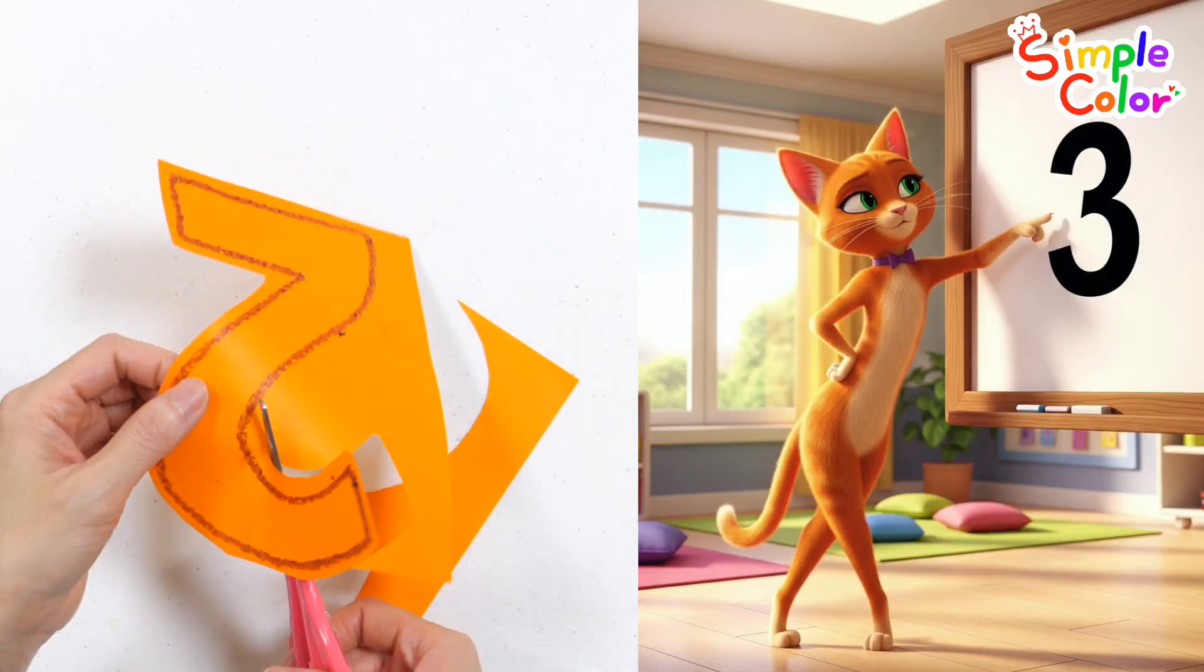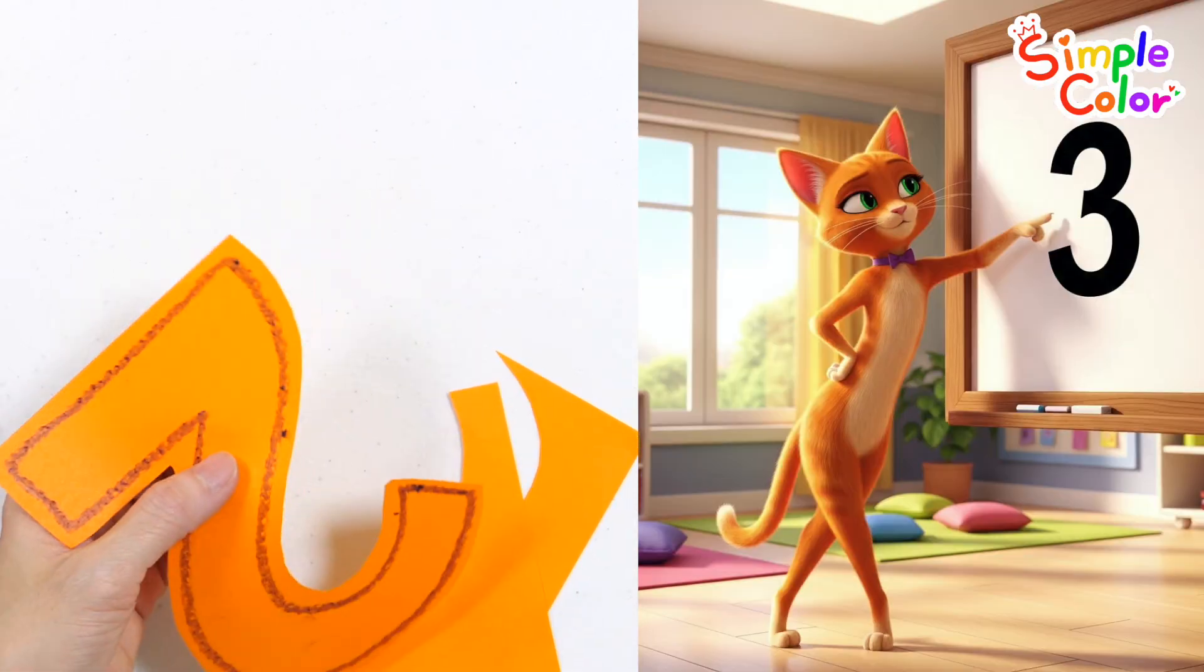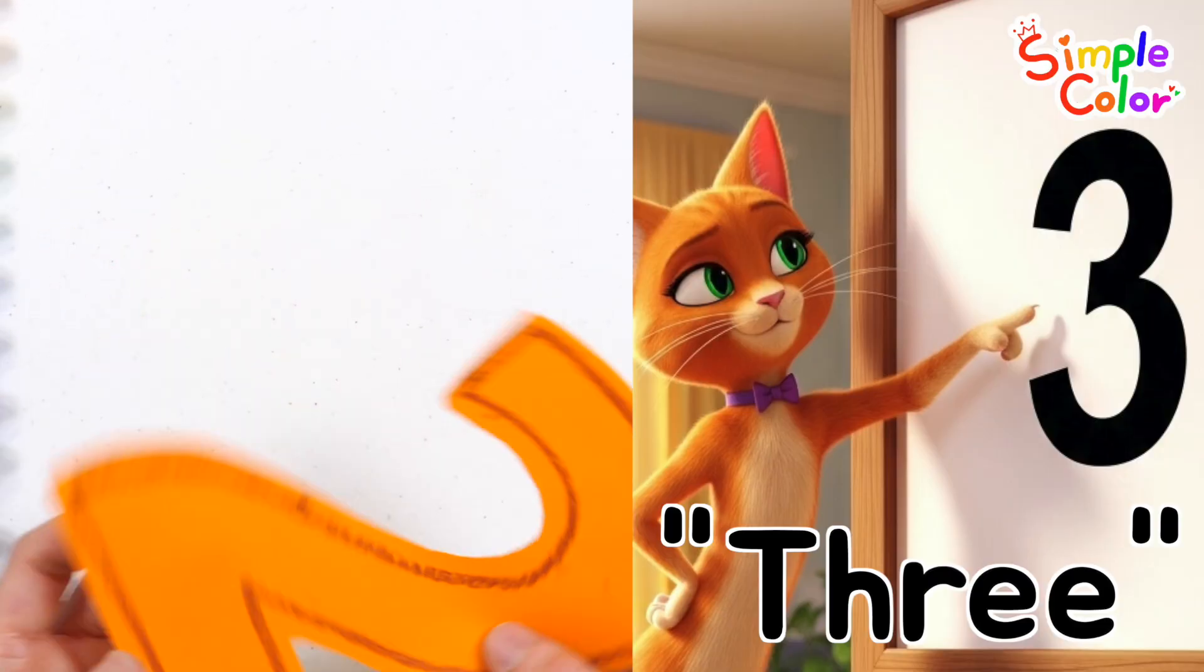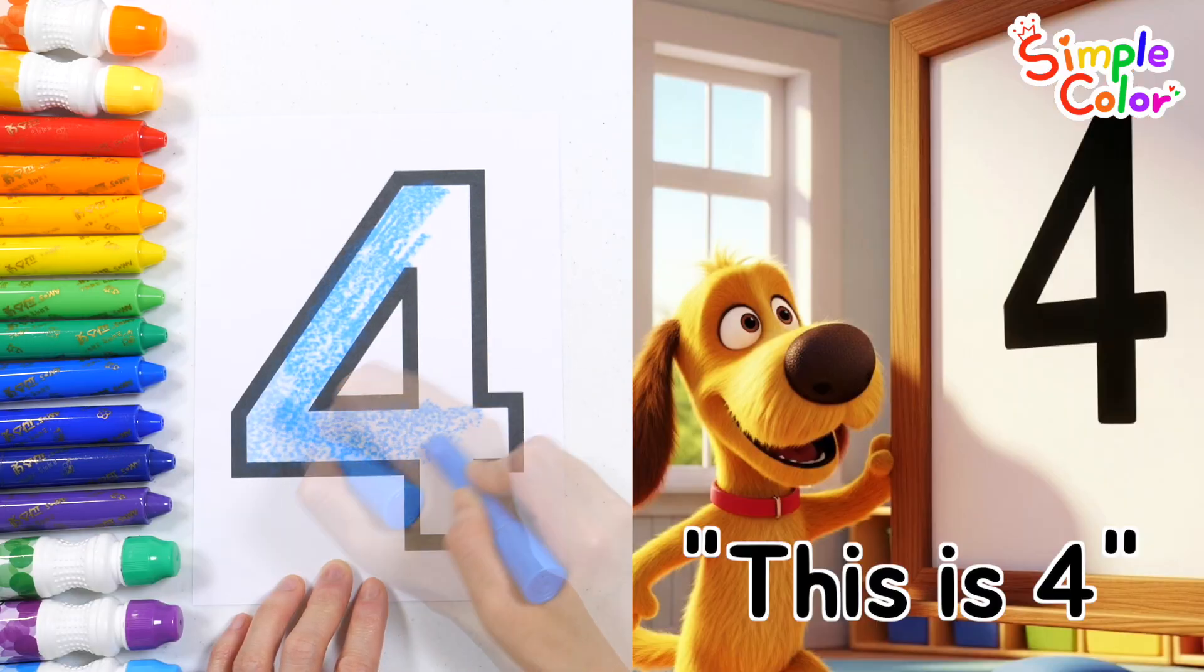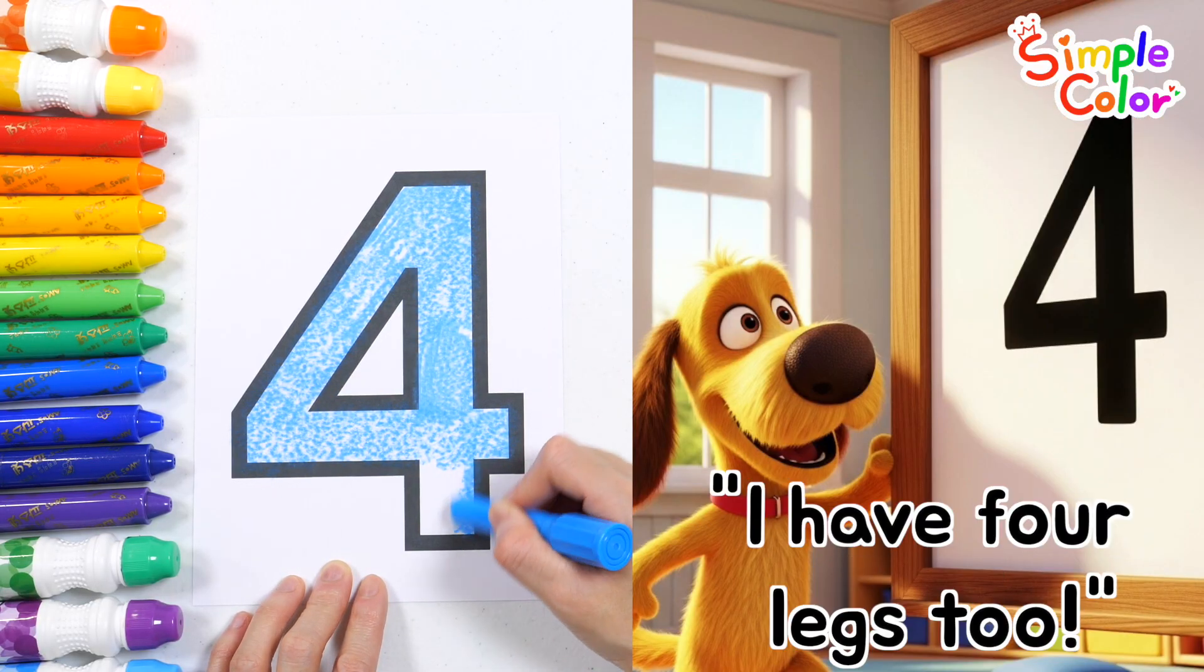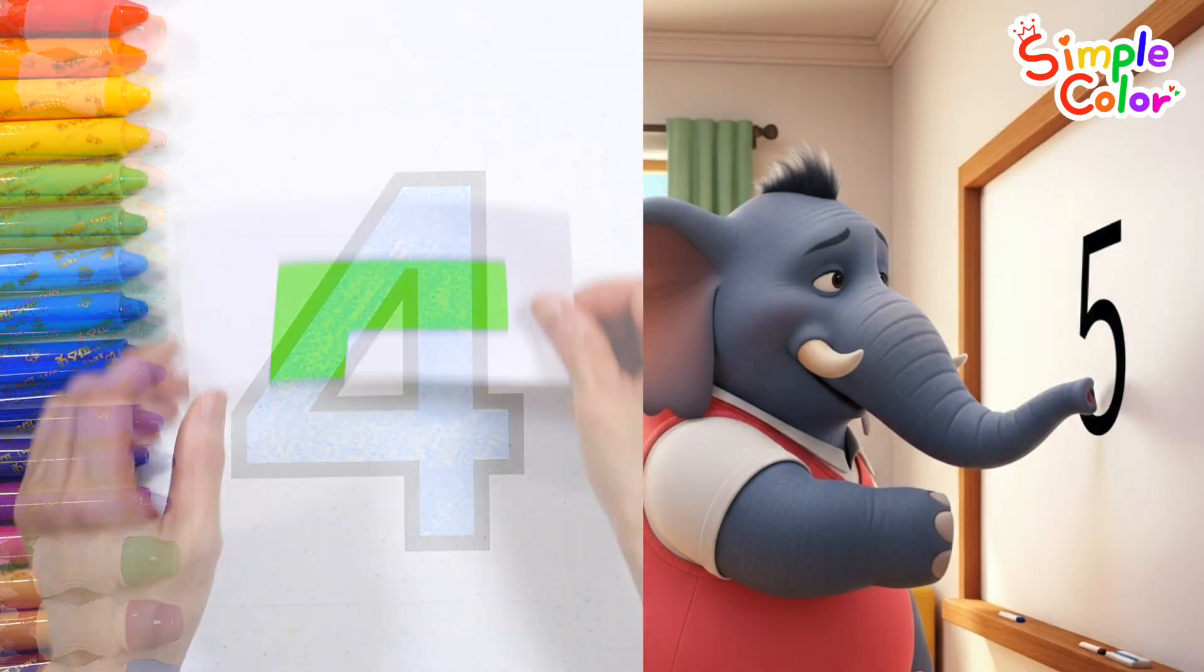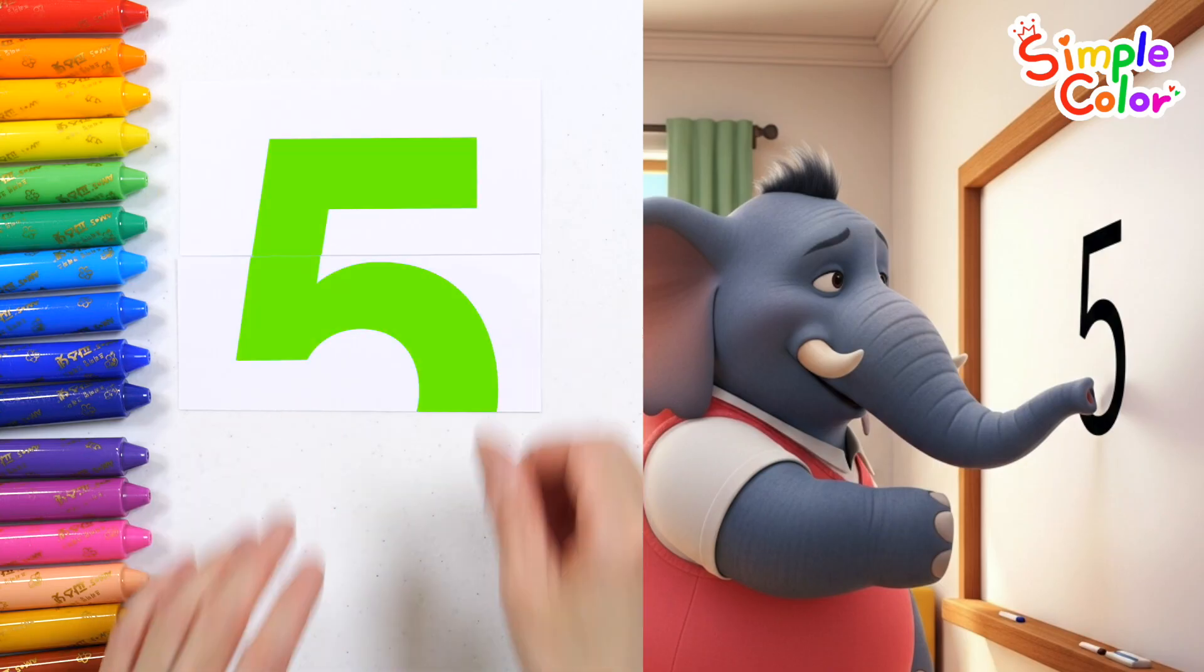The cat stretches and points to the number three on the board. This is three. The cute puppy reads the number out loud. This is four! I have four legs, too! The elephant draws the number five with its trunk and reads it. Five!